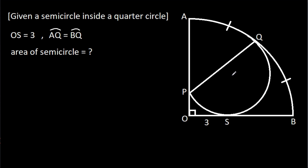In this video, we have been given a semicircle inside a quarter circle. OS is 3, and arc AQ is equal to arc BQ. We have to find the area of the semicircle.